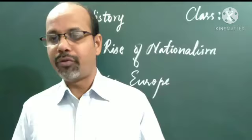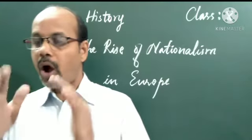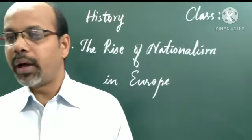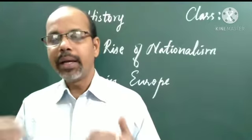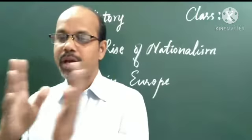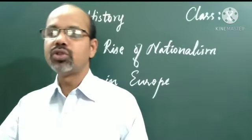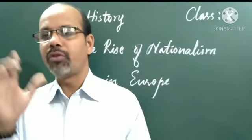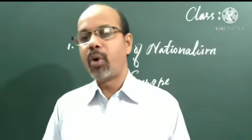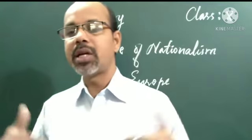Here also we are coming to study about the different nations and how the nation state was formed in Europe, especially France. In 1848, Frederick Soreau, a French artist, prepared a series of four prints visualizing his dream of a world map made up of democratic and social republics, as he called them. One picture is also given in the textbook showing how he wanted to change his country or the entire world into a democratic setup — from monarchy, many countries were turning into democracy.